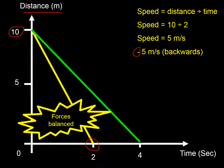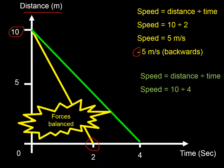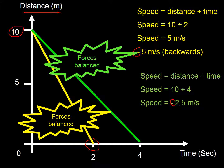And here's something traveling a little more slowly — it's done 10 meters in total but taken 4 seconds, so that's 2.5 meters per second. Again we say minus, meaning it's going in the opposite direction. Forces must be balanced because it's a constant velocity.